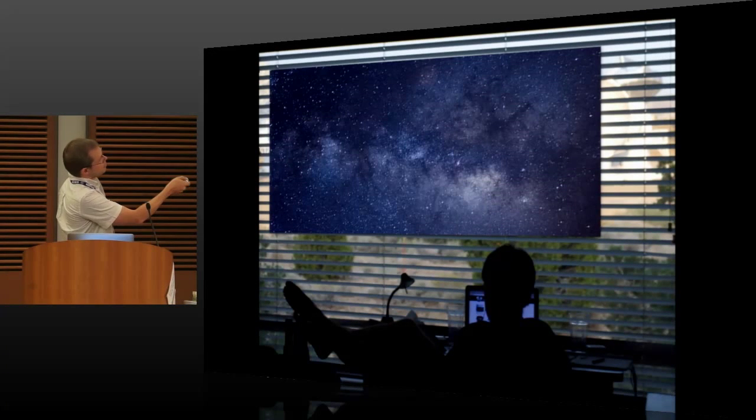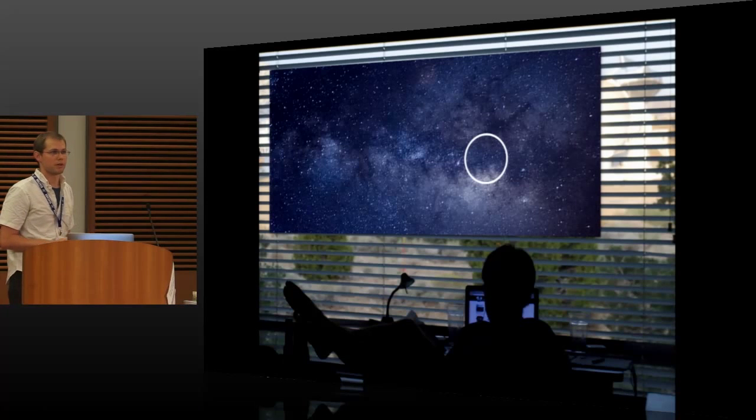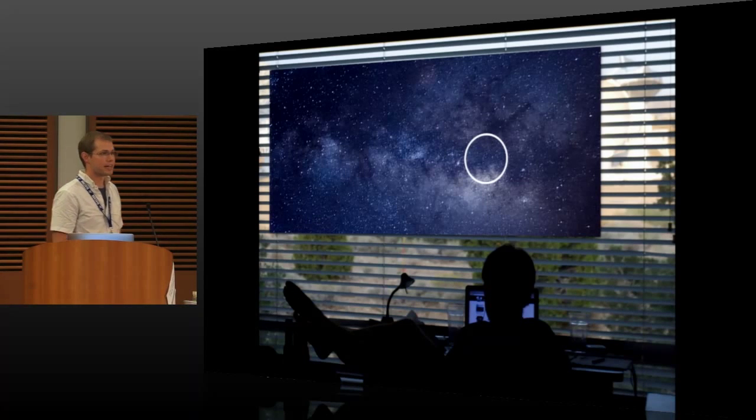We looked in the center of our galaxy in a region called Sagittarius B2N. This is where almost all of the new molecular detections to date have been made. So it's an incredibly chemically rich source.